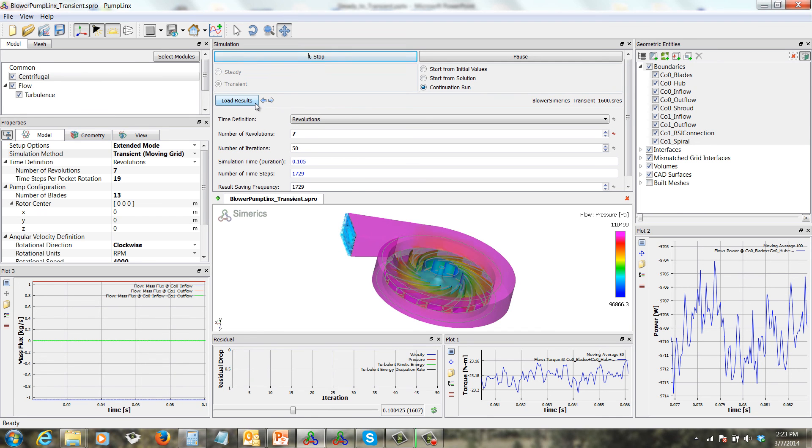As you can see, very little needs to be done in PumpLynx to set up a transient run compared to SimericsMP. In SimericsMP, you have to deactivate the inertial frame, activate volume remesh, and calculate and enter the transient parameters related to the time step. That's because the centrifugal template in PumpLynx automatically takes care of all this for you, which is one of the advantages of PumpLynx.